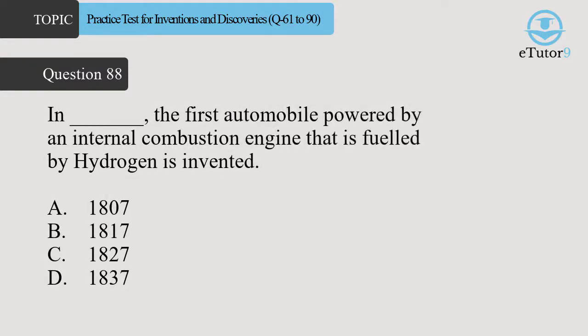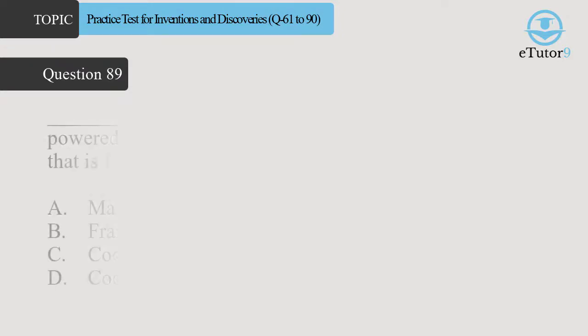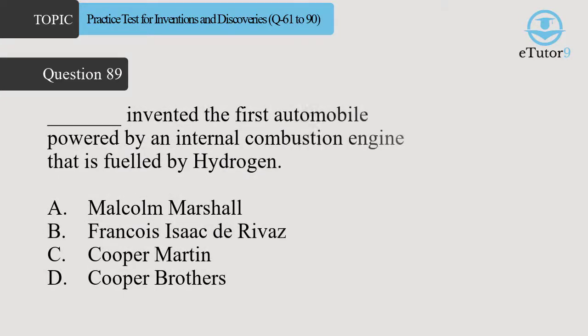Question 88. In Dash the first automobile powered by an internal combustion engine, that is fueled by hydrogen, is invented. Answer is A. 1807. Question 89. Dash invented the first automobile powered by an internal combustion engine, that is fueled by hydrogen. Answer is B. François Isaac de Rivaz.